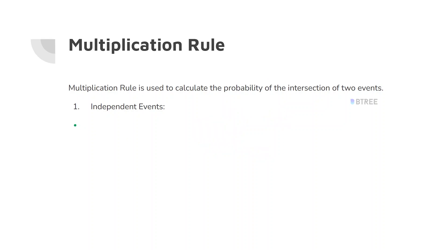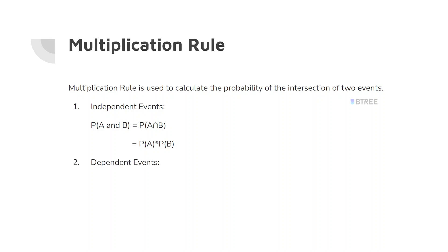The formula for an independent event: P(A intersection B) = P(A) × P(B). We multiply P(A) and P(B). This is the independent event formula.